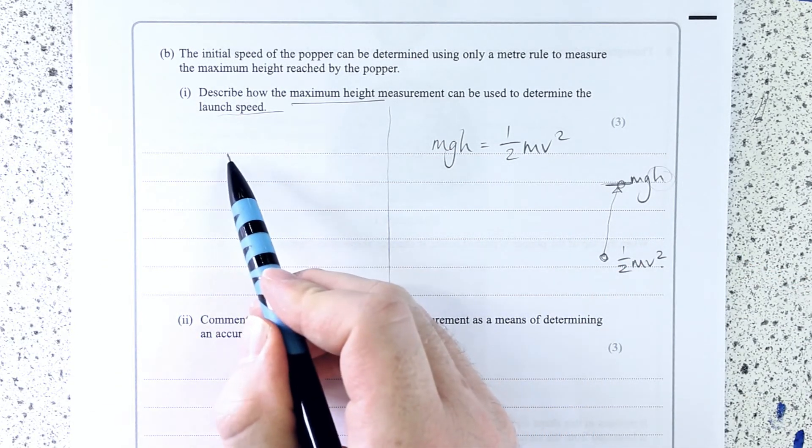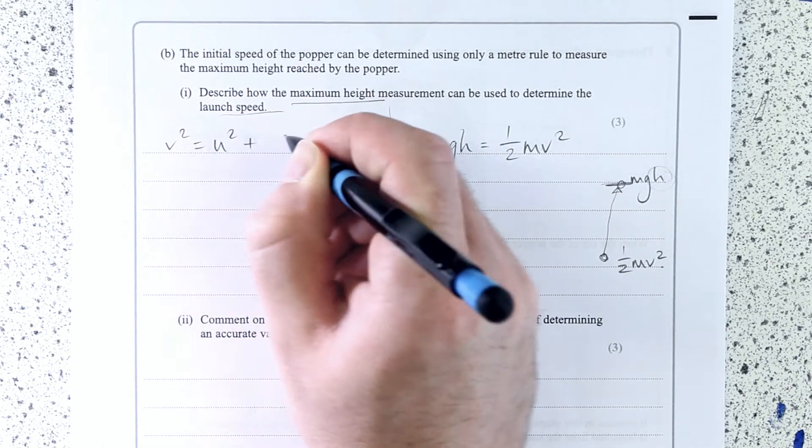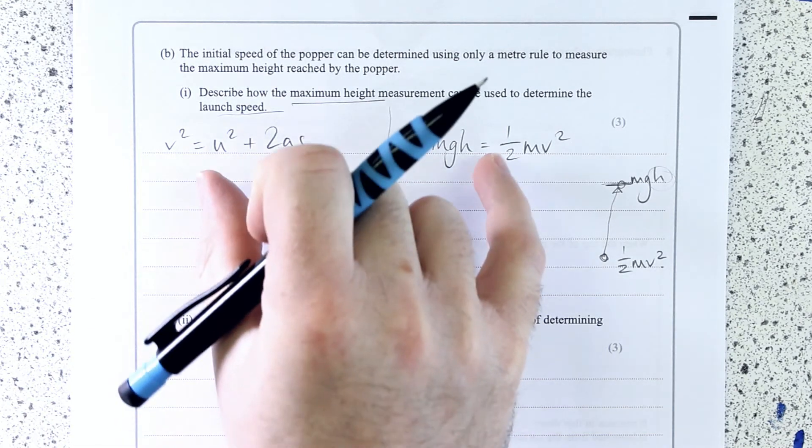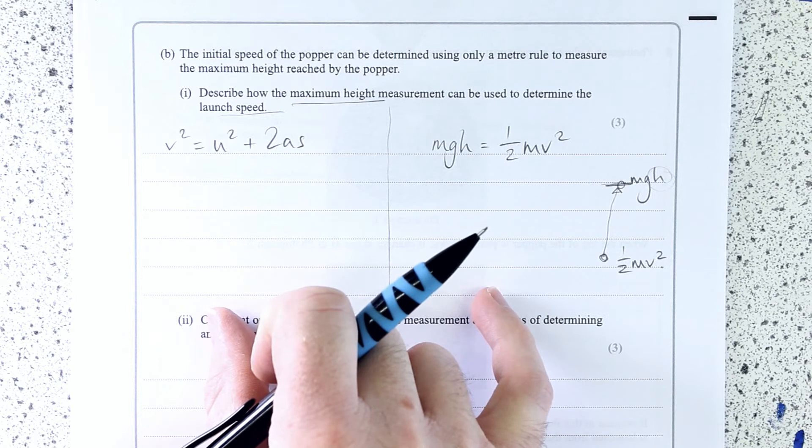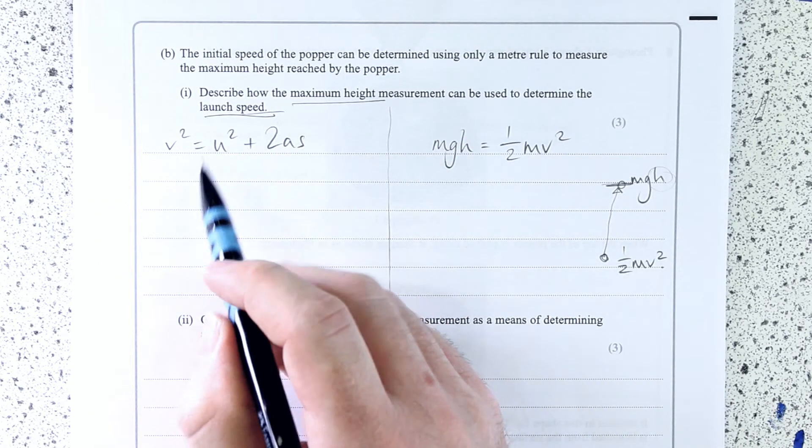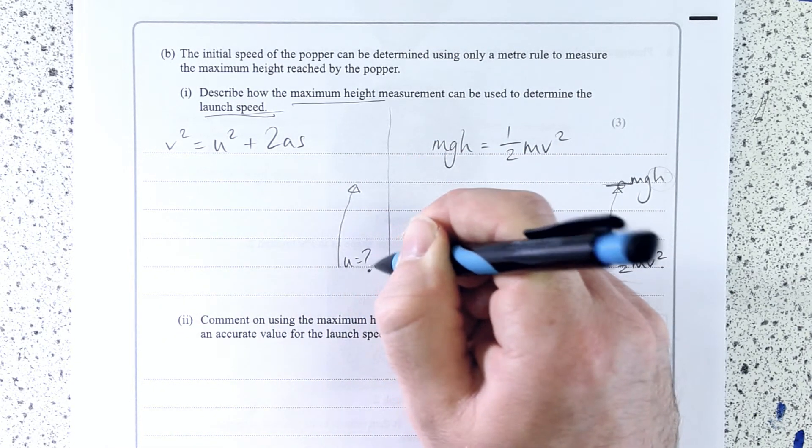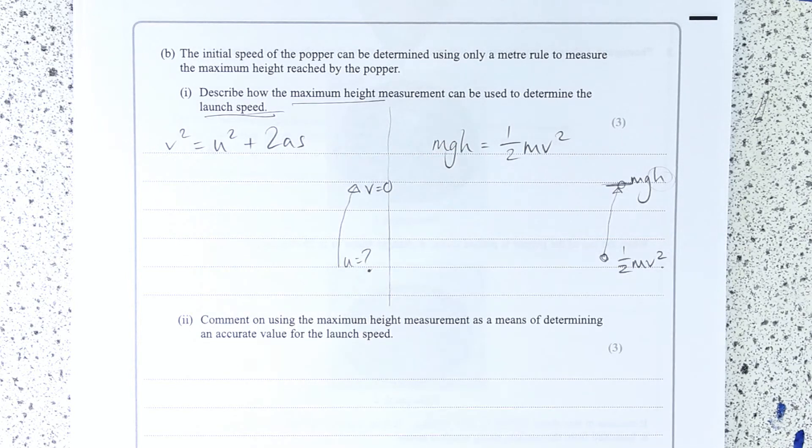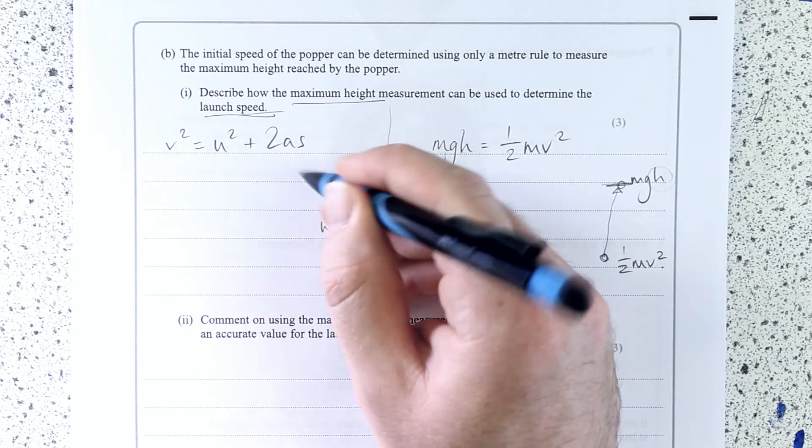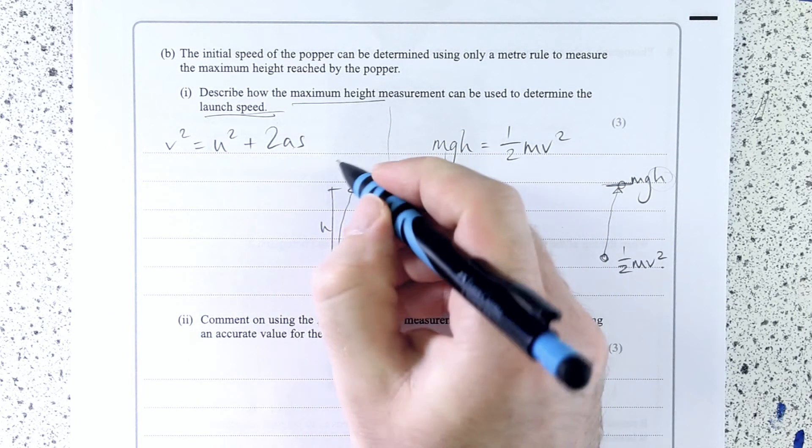Lastly, otherwise, sorry, you can use V squared equals U squared plus 2AS. And what you're looking for is you're looking for, can you rearrange that into an equation for the launch speed? Well, we know in this case we want the launch speed. We know the final speed is 0, and H is the displacement S, and we know A is G.